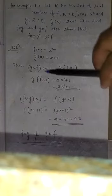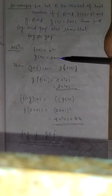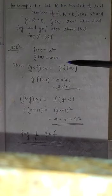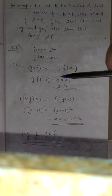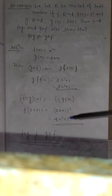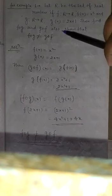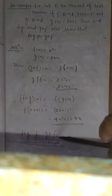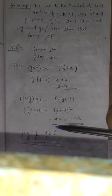So f∘g = 4x² + 4x + 1, and g∘f = 2x² + 1. That is not equal, hence proved: f∘g ≠ g∘f. Clear.